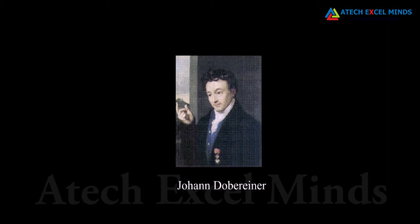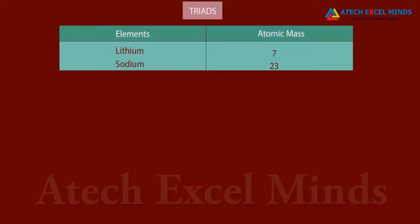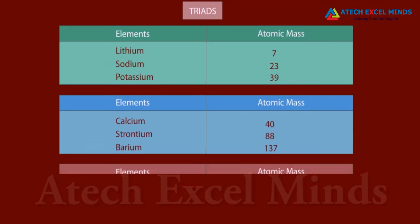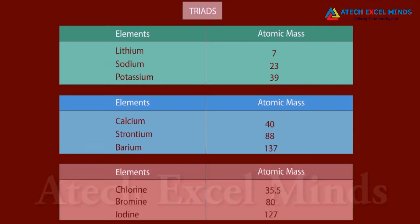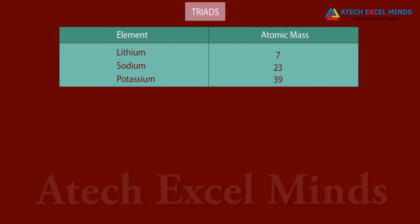In 1817, Johan Dobereiner identified groups of three similar elements called triads. The elements of a triad had similar properties, and when arranged in order of increasing atomic masses, the atomic mass of the middle element was roughly the arithmetic mean of the other two. Lithium, sodium, and potassium formed a triad — the atomic mass of sodium equals the average of the atomic masses of lithium and potassium.